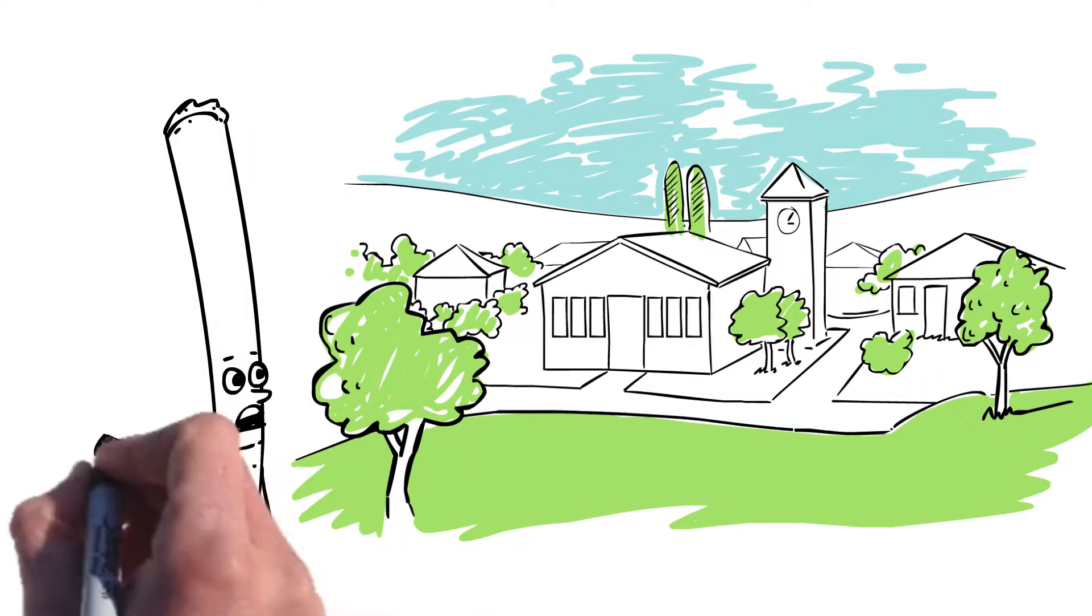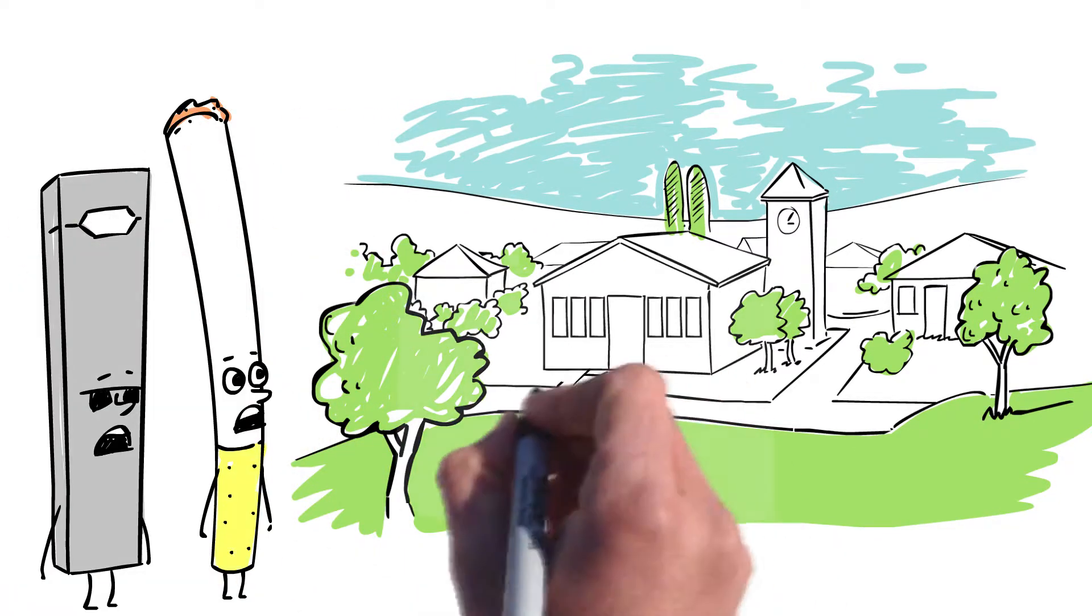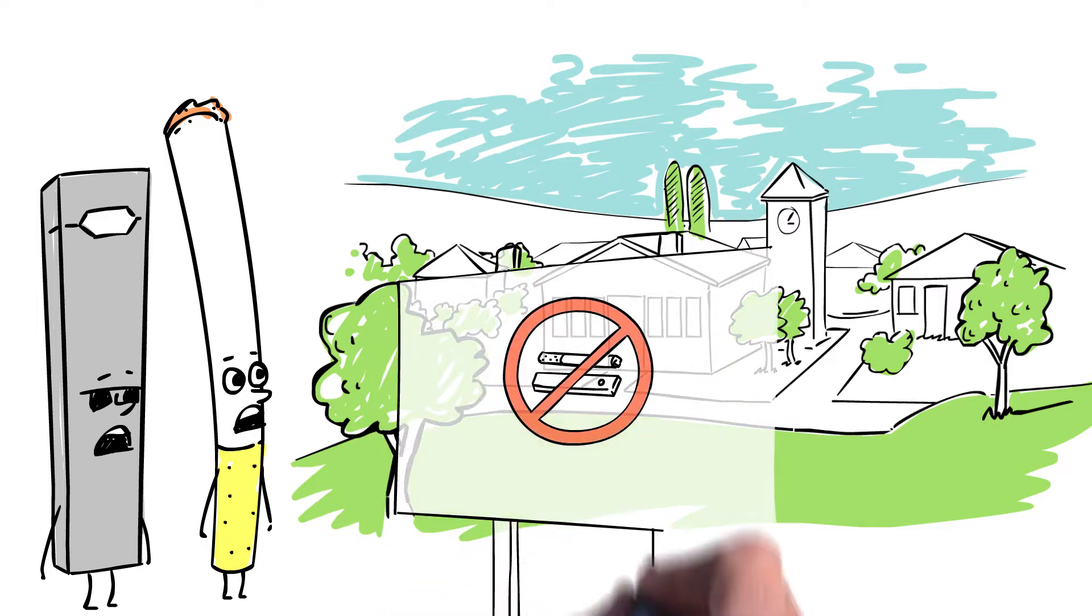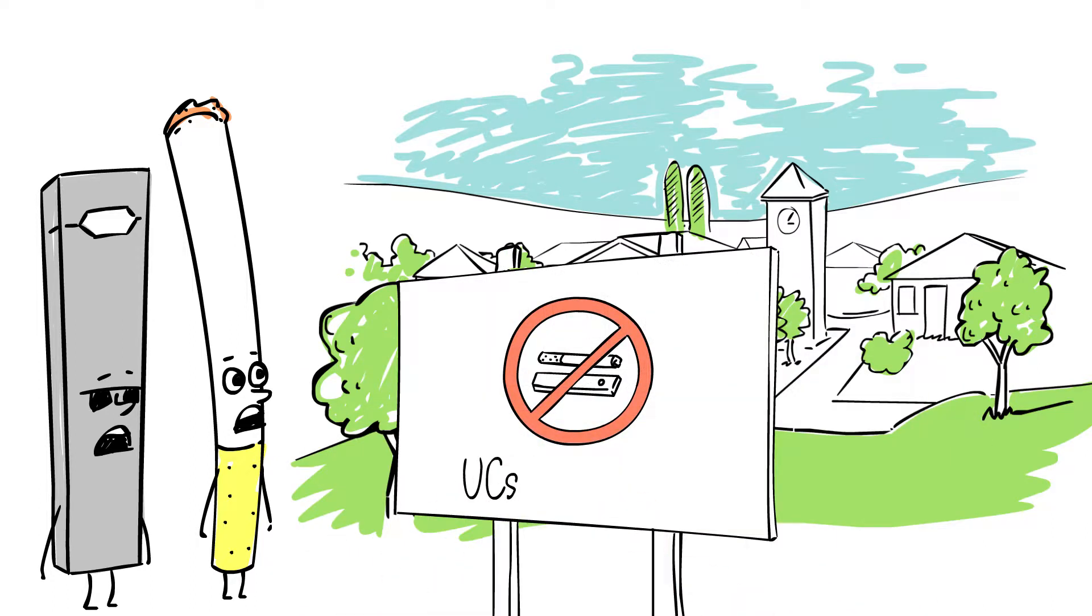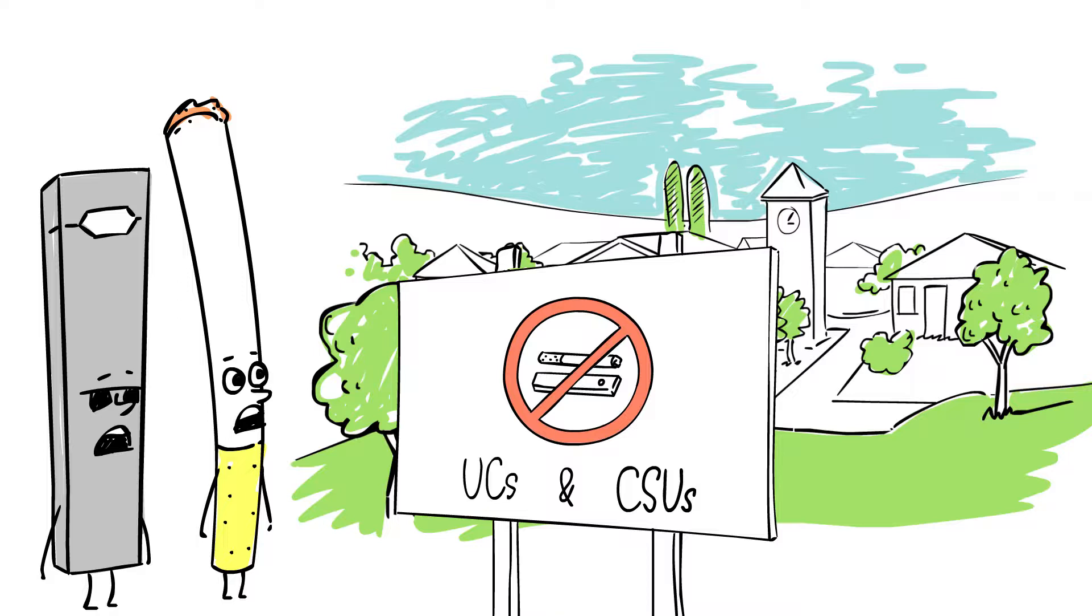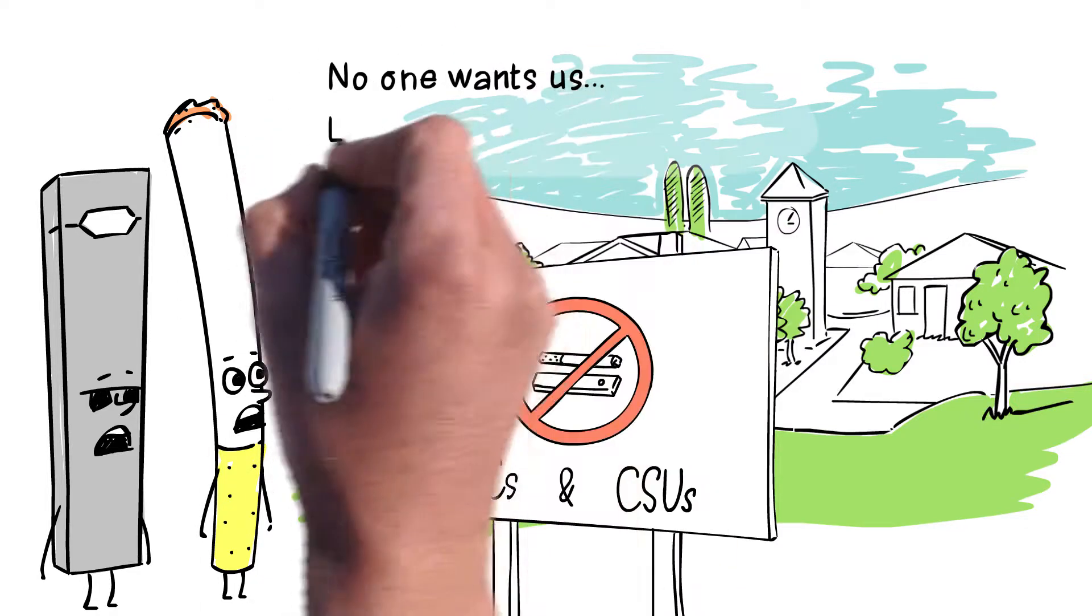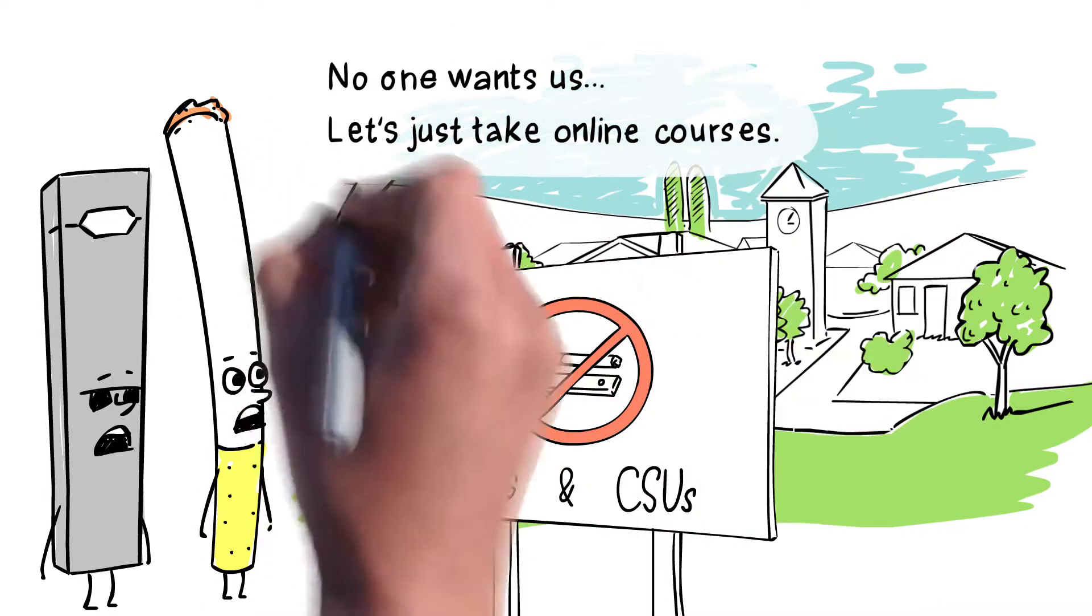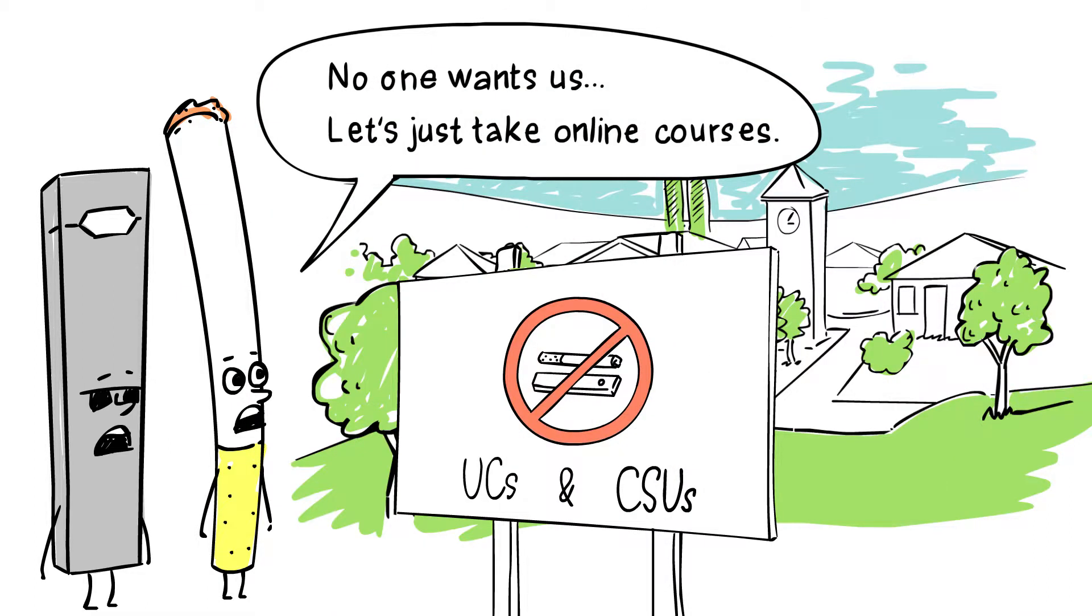All four-year public universities in the state are 100% smoke and tobacco free, which includes both the University of California and the California State University systems. In addition, many California community colleges and private universities in the state are also 100% smoke and tobacco free.